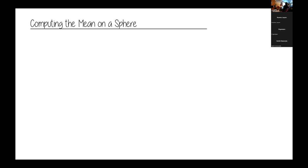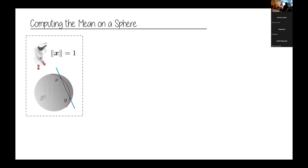The first example is about computing the mean on the sphere. The motivating example here is that we may have some data belonging to the hypersphere. The hypersphere, roughly speaking, is just the set of vectors whose norm is actually one. And these can be related to the unit quaternion that we often use to represent orientation of rigid bodies in Cartesian space.